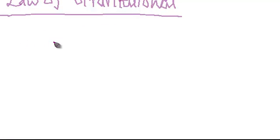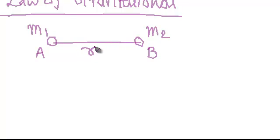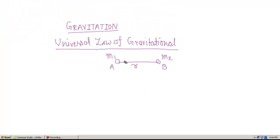Mathematical derivation. Suppose A and B are two particles having mass m1 and m2 respectively, and they are separated by a distance r. Then by the law of gravitation, the particle A attracts particle B with a force F such that F is directly proportional to m1 multiplied by m2, and F is inversely proportional to r squared.